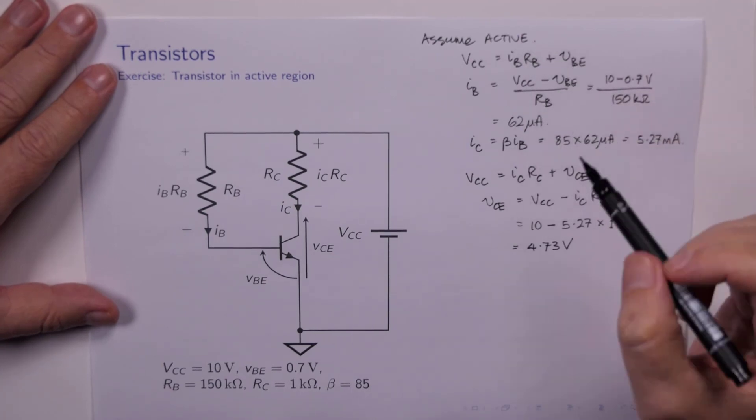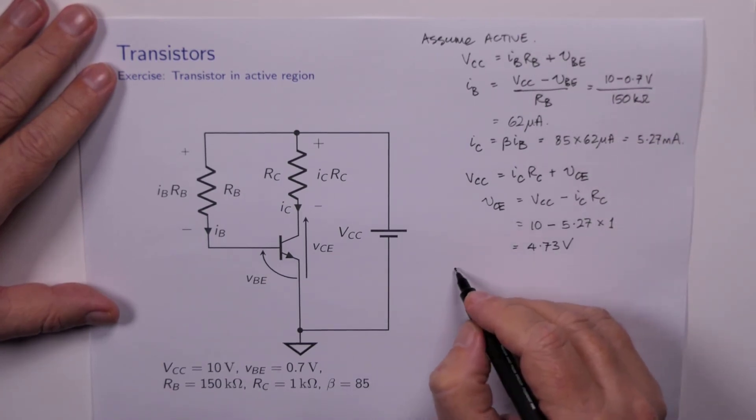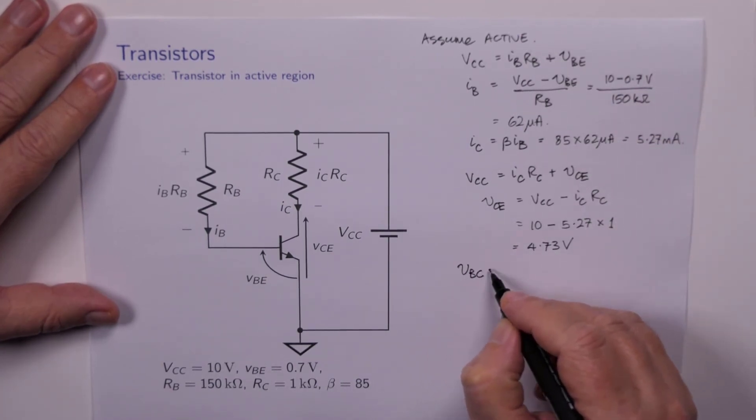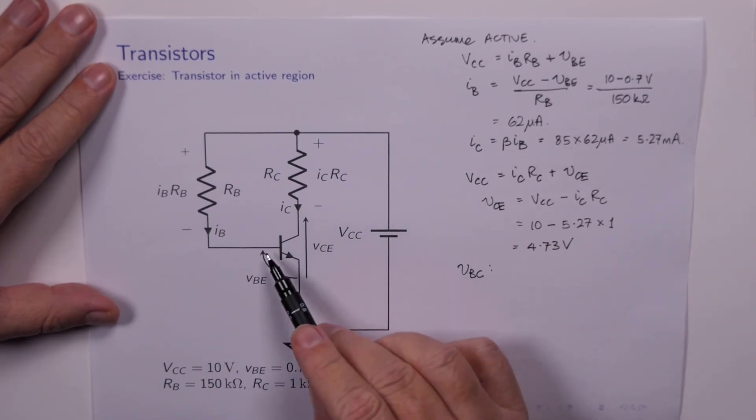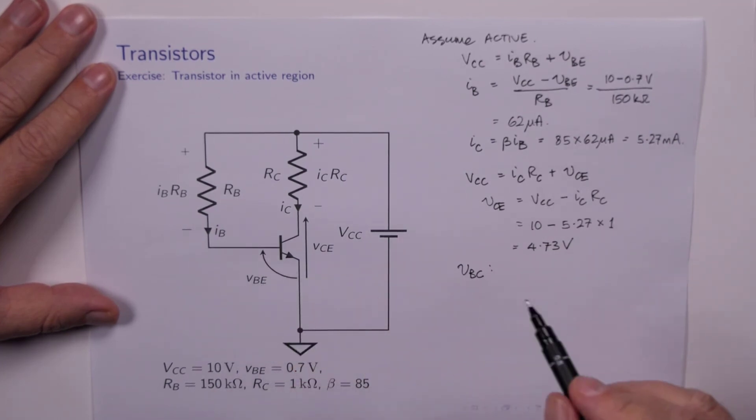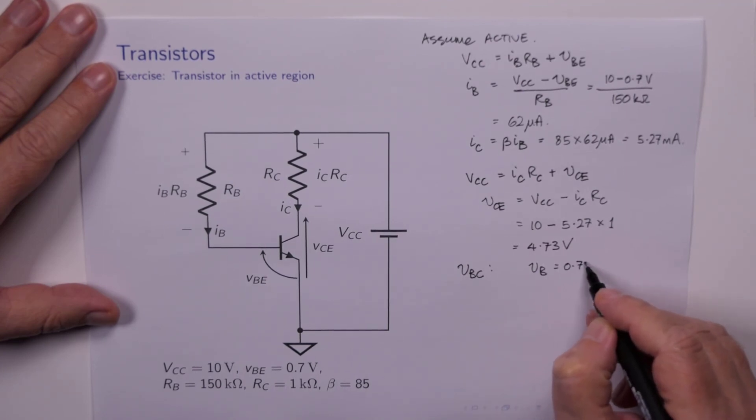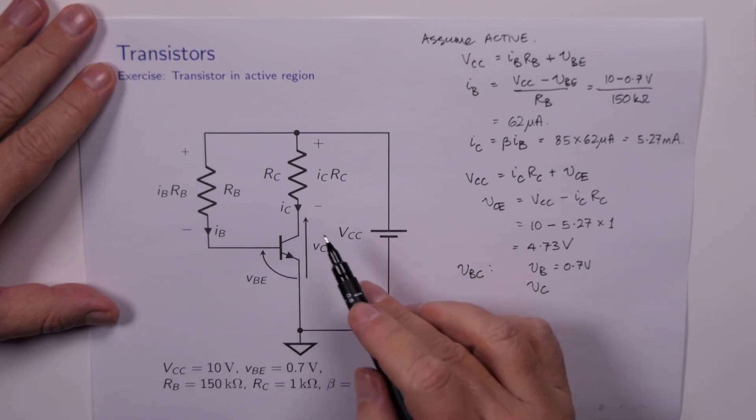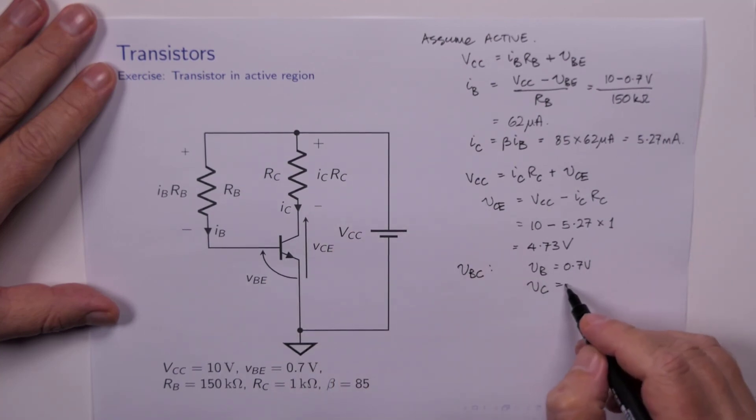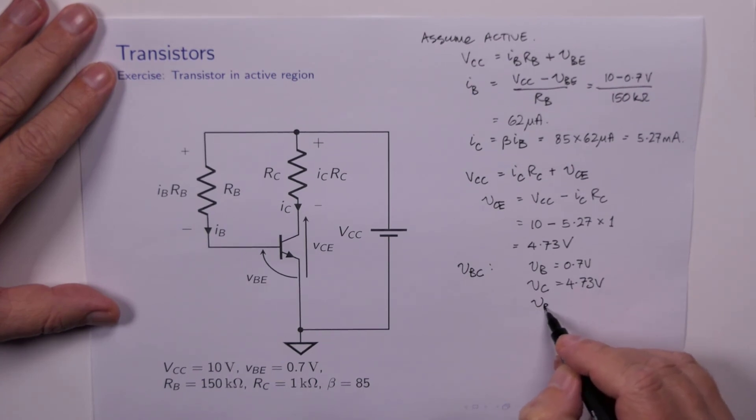We've assumed it's active. So the other thing to check is VBC. Well, the base voltage is 0.7 of a volt. So VB is 0.7 volts. VC is the same as VCE at the moment, and that is 4.73 volts. So clearly VBC, which is VB minus VC, is less than 0.